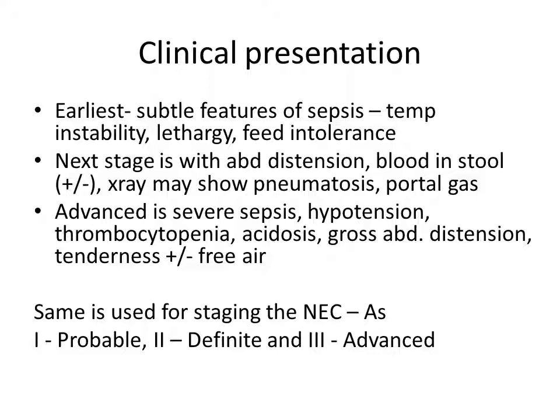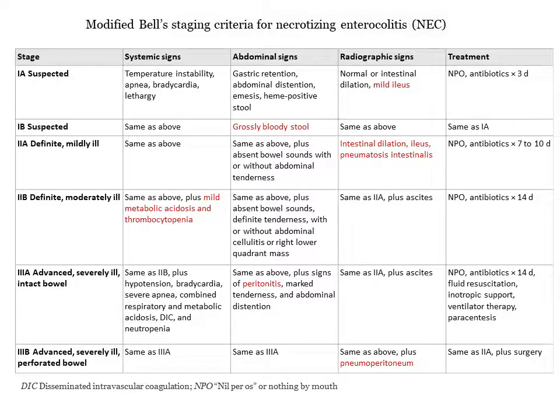The advanced stage — stage 3 NEC — shows severe sepsis with features of hypotension, thrombocytopenia, acidosis, decreased urinary output or renal failure, gross abdominal distension, tenderness, and possible free air. To summarize the modified Bell's staging: stage 1 is suspected NEC, stage 2 is definite NEC, and stage 3 is advanced NEC.